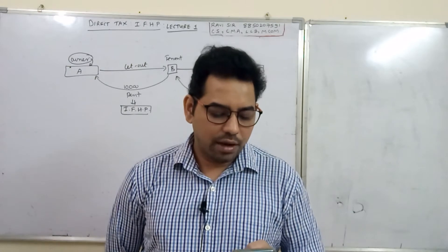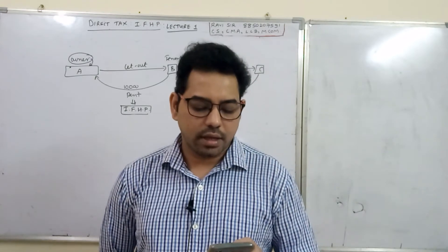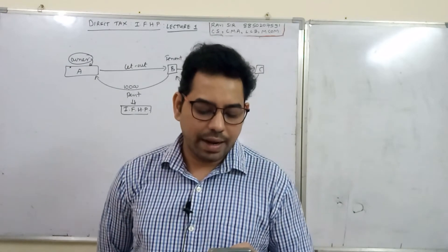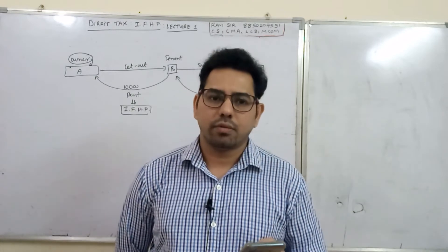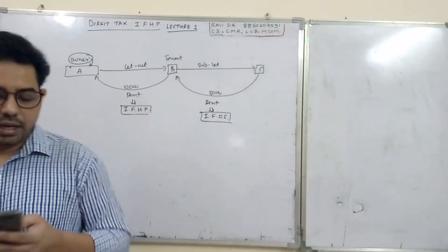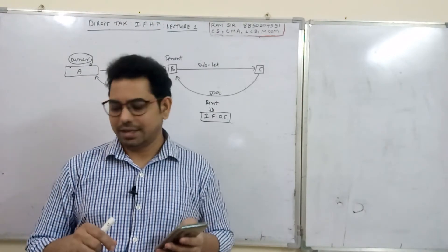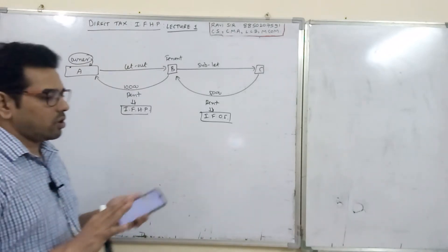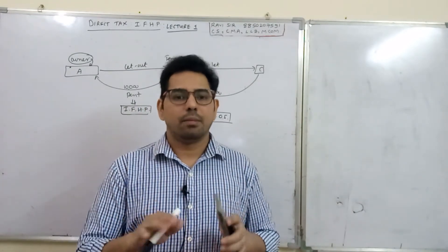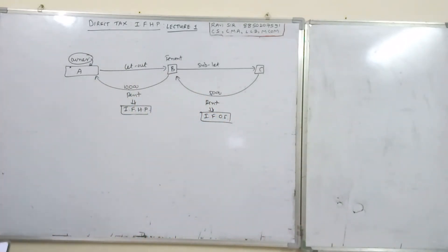The annual value means the annual earning capacity of the house property, and it is considered as income under this head if the following two conditions are satisfied: first, there must be a house property — house property means a house and land appurtenant or attached to it — and second, the assessee must be the owner of such house property. So income from house property is taxable only when you have a house property and you are its owner, whether part owner or full owner.